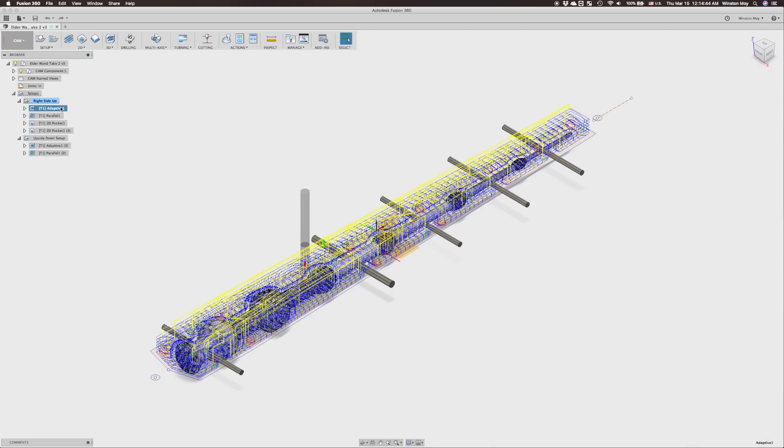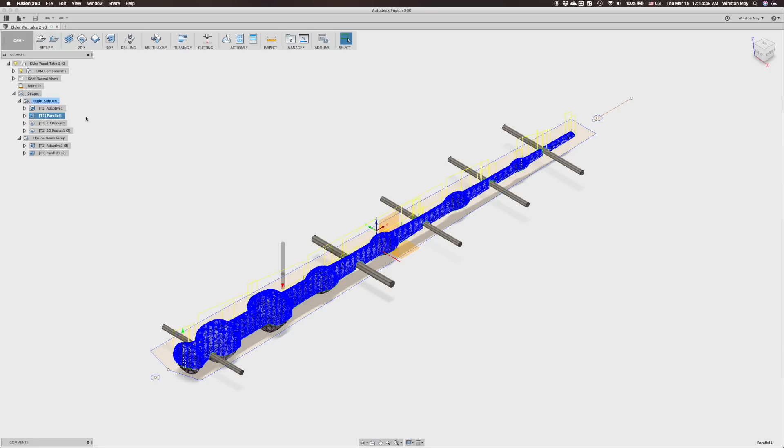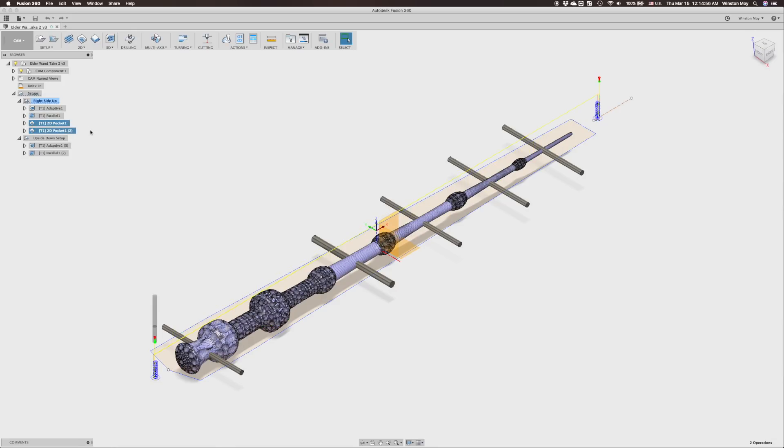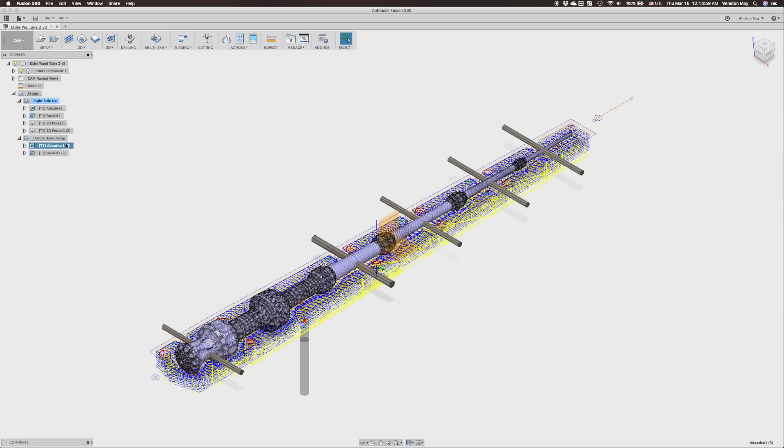My wand project was going to be a two-sided machining job. On the first side, I would start with an adaptive clear using a quarter-inch end mill to do the bulk of my material removal, followed by a parallel pass with an eighth-inch ball end mill to refine my wand's features. On the top face, I would also bore out some holes for indexing pins so that I could flip my piece over and carve it from the other side.